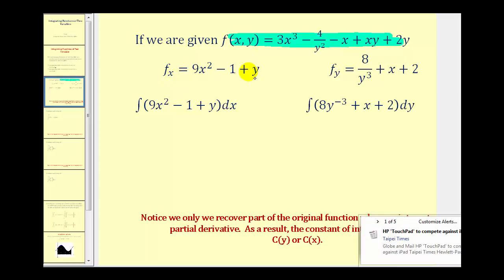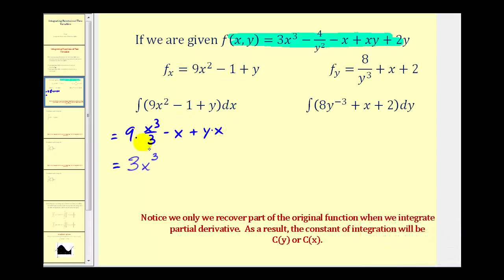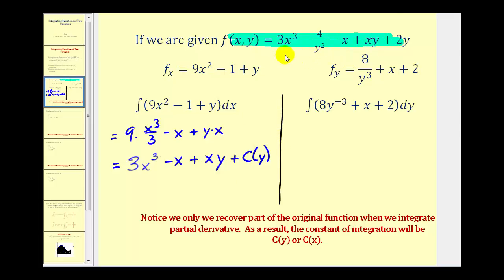Now let's see if we recover the function if we integrate this partial derivative with respect to x. So we'd have 9 times x to the third over 3 minus x plus, again treating y as a constant, this would give us y times x. Simplifying, we have 3x cubed minus x plus xy. Comparing this anti-derivative with the original function, notice we don't recover the entire function — we're missing some terms. So instead of just putting plus c, we're going to put plus c of y to recognize that we may not have recovered the entire function in terms of y.